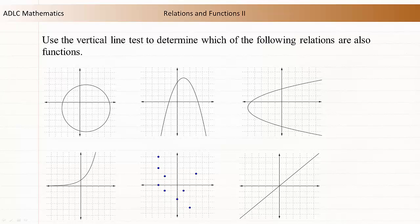The vertical line test can be performed by actually drawing vertical lines, or by placing a pen or pencil vertically on top of the graph.